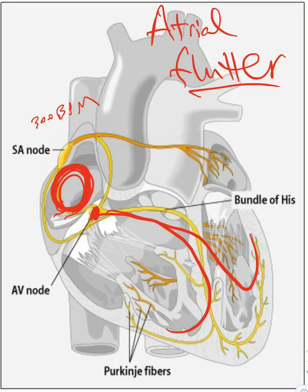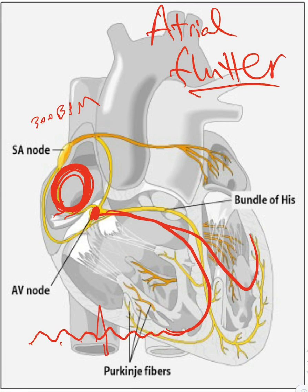How do you detect that? You're going to look at the EKG and you will see flutter waves. If the AV node conducts the electricity every three beats, you're going to see one, two, three beats and then a QRS — one, two, three, QRS.